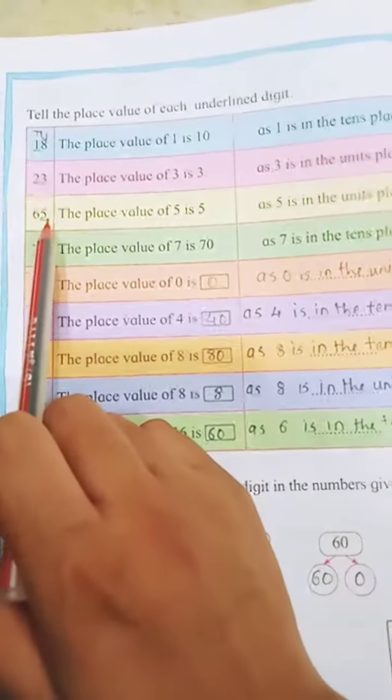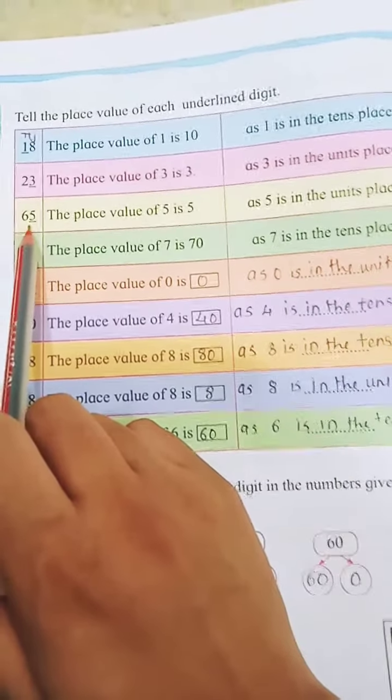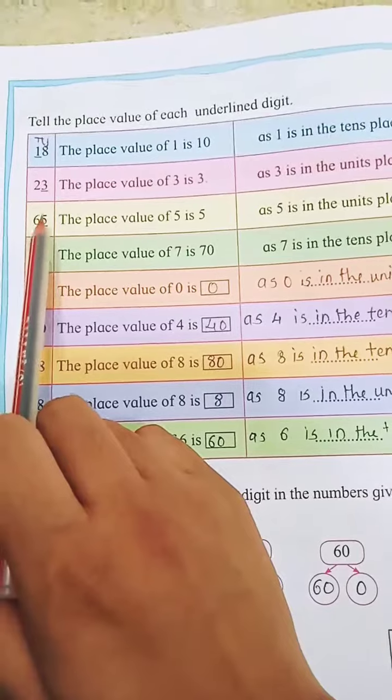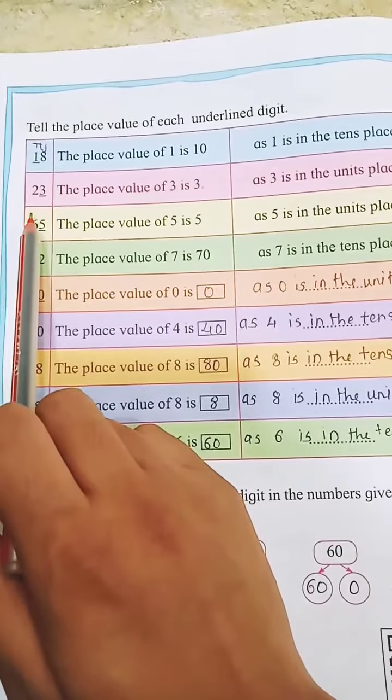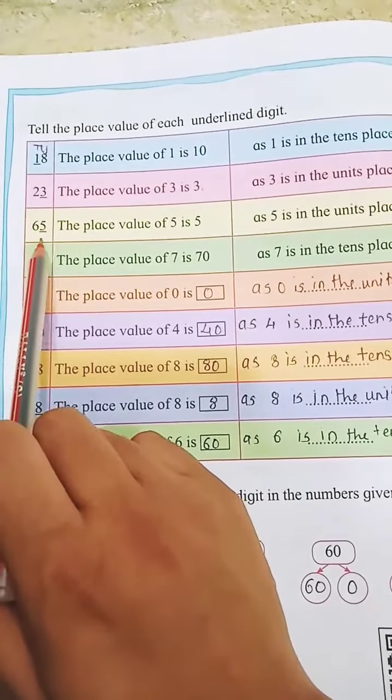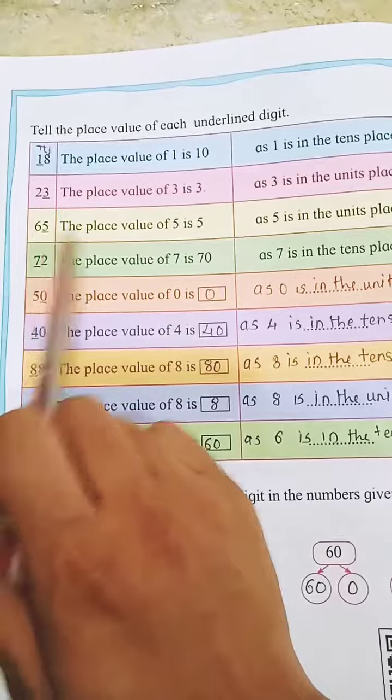Next one: 65. The underline is at which number? 5. So 5 is at unit's place and 6 is at 10's place. The place value of 5 is 5.